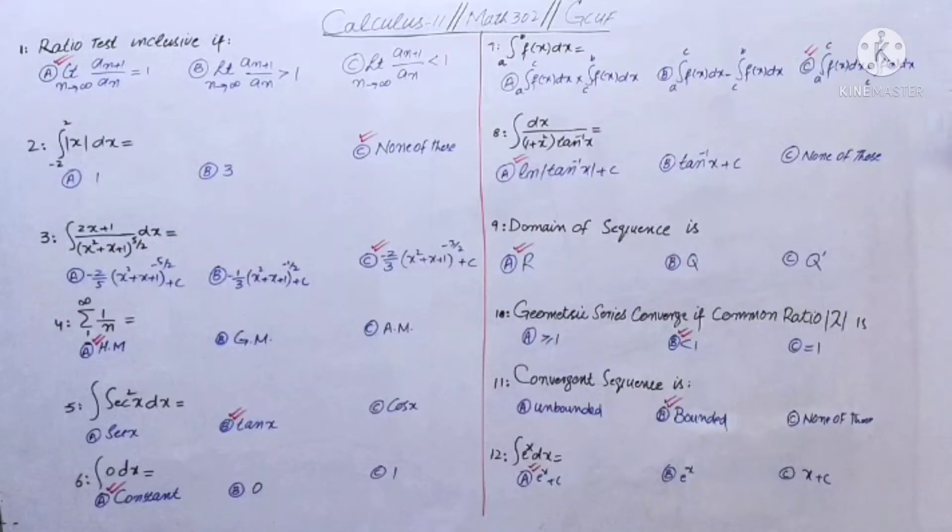Number four: summation 1 to infinity 1/n. This is the harmonic series. Integral sec²x dx will be equal to tan x. This is the formula. Integration integral 0 dx, this is the constant.